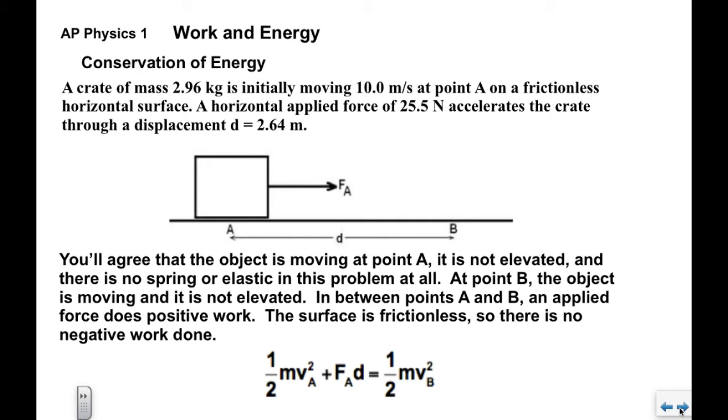Now again, you'll agree that it's moving at point A, so it's going to have a kinetic energy term. It's not elevated and there's no spring or elastic. So at point A, we have one half mv_a squared. That's the energy in the system. We of course have an applied force between A and B. It's going to do positive work. It's going to add energy to the system. F_A times d.